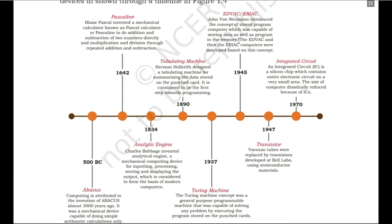From the tabulating machine in 1890 to the Von Neumann principle in 1945, what changed was the concept of how a computer works. Initially, programs were on punch cards used by the processing unit for calculation. But in 1945, Mr. John Von Neumann proposed that a computer will have a dedicated memory and the processing unit will take the data from that dedicated memory. So all the changes from 1890 to 1945 were conceptual changes about how a computer will work.